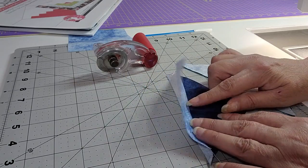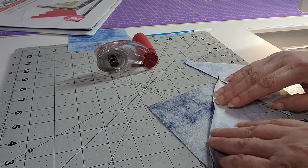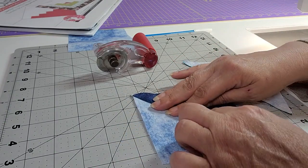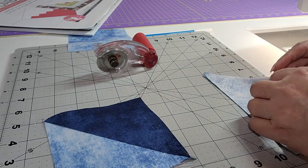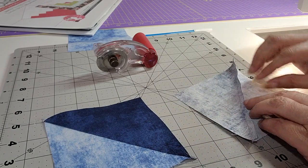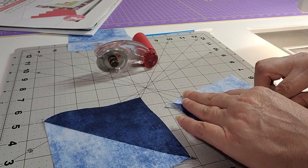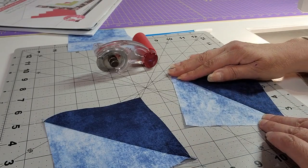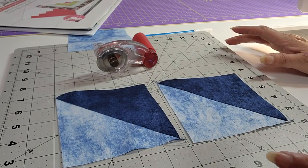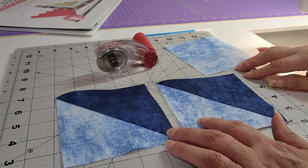There's my two pieces. You'll fold them open and you want to have your fold go toward the dark side. I just finger press it first, and you'll do that with both of them. Then you have two half square triangles, and you will do that with your other two light and dark four and seven eighths pieces. You will end up with four half square triangles.